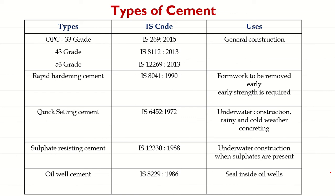Sulphate Resisting Cement has reduced contents of C3A and C4AF. It is used in constructions exposed to severe sulphate action by water and soil, such as canal linings, culverts, retaining walls, siphons, etc.